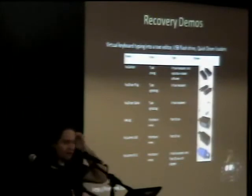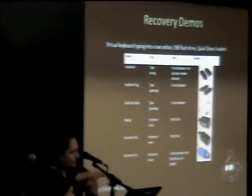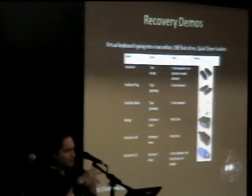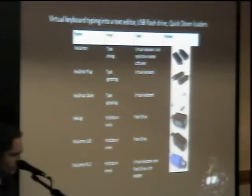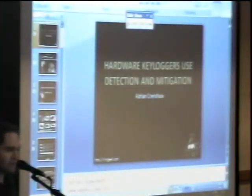Now for a demo of how these recovery schemes work. Here are the six hardware keyloggers I have. There are essentially three ways to recover logs: you hit a key sequence and it becomes a thumb drive you can copy a text log off; or you hit a key sequence and it creates a virtual keyboard that types out a menu system; or some have quick downloaders — software you install to grab the logs faster than having it type into Notepad.